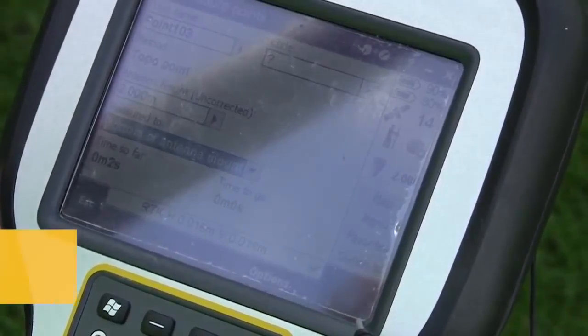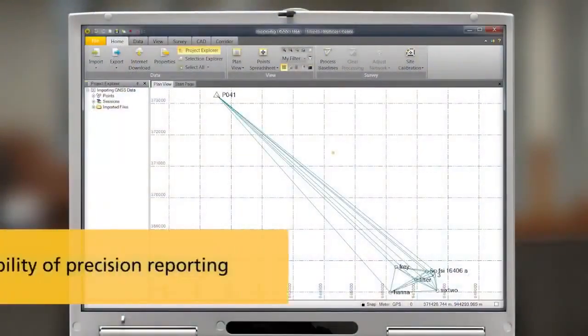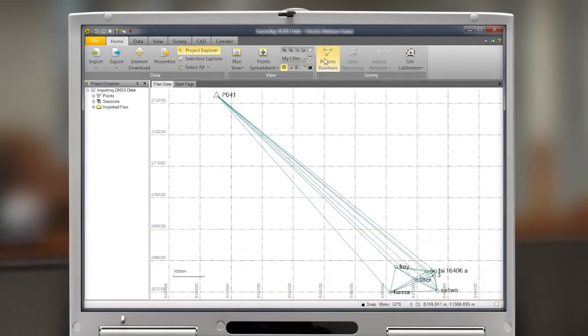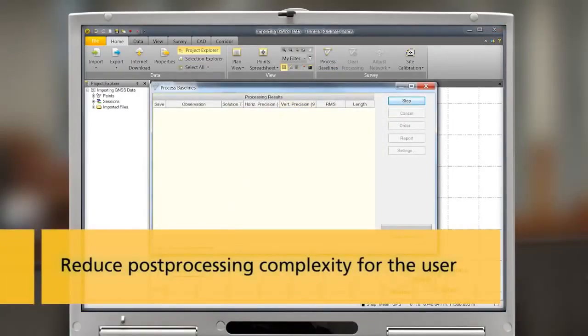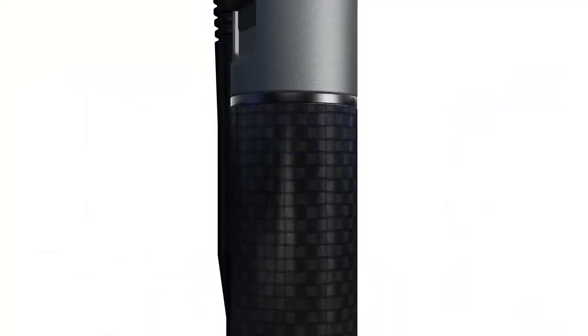Trimble HD GNSS is designed to increase RTK initialization speed, improve real-time and post-process measurement precision, and eliminate the possibility of a bad fix.